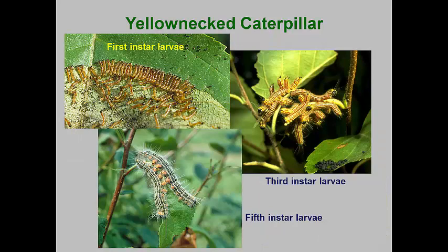The first-instar yellow neck caterpillars feed gregariously as surface skeletonizers. Depending on the number of larvae, only one to a half dozen leaves will be skeletonized. Soon the larvae are large enough to eat entire leaves. They continue to do this gregariously, with masses of caterpillars eating individual leaves. The masses of caterpillars may move around the tree, which often can mask their defoliation. When you find the caterpillars and disturb them, they often rear with their head and tail in the air.